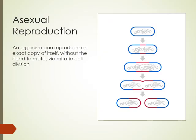Mitotic cell division will allow organisms like amoeba and paramecia to create an exact copy of themselves. They don't need to mate with somebody else — they can just split.